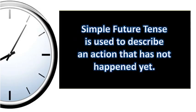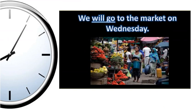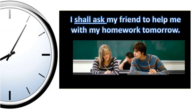Future simple. This tense is used to describe an action that hasn't happened yet. The structure is subject plus will or shall plus a verb. For example: We will go to the market on Wednesday. I shall ask my friend to help me with my homework tomorrow.